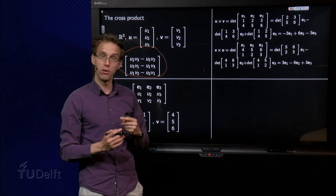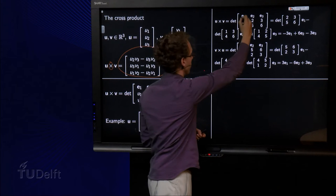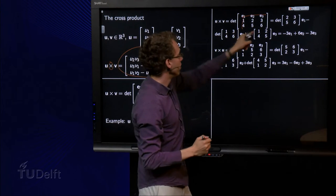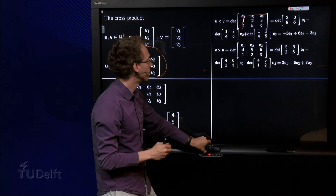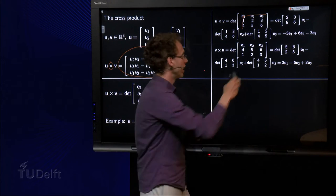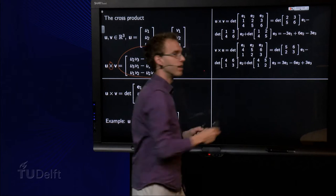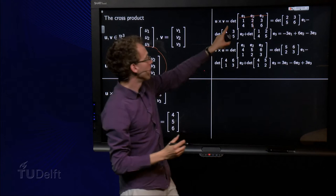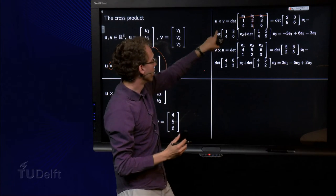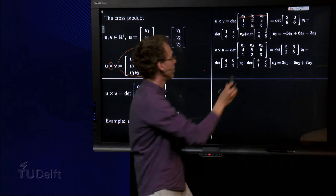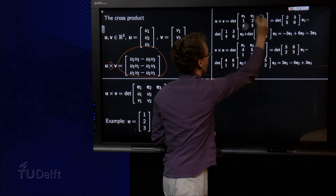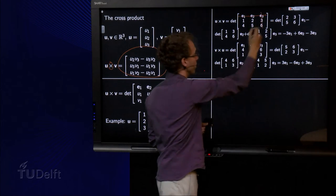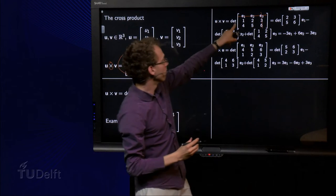Then we expand along the first row. We have e1 times the determinant 2, 3, 5, 6, minus e2 times the determinant 1, 3, 4, 6, and finally plus e3 times the determinant 1, 2, 4, 5.